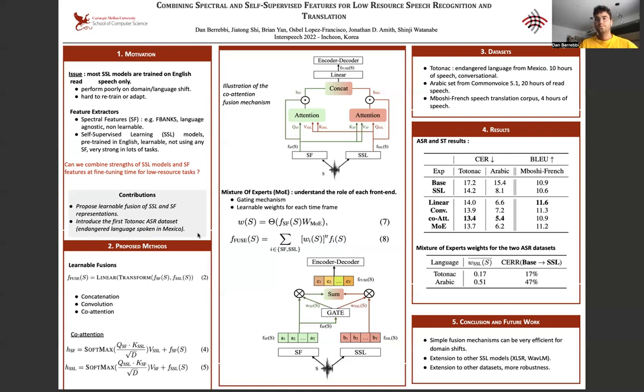So firstly, let me talk about the proposed methods. We're extracting features with two different front-ends, so we need to get the same number of frames, the same frame shifts. Either you can tune the parameters of the self-supervised learning models or the spectral feature extractor to get the same number of frames, or you can just extract them with the best parameter or the classic parameter and then linearly project them. So get the same number of frames for each front-end.